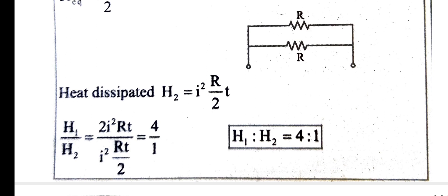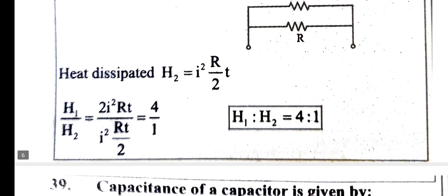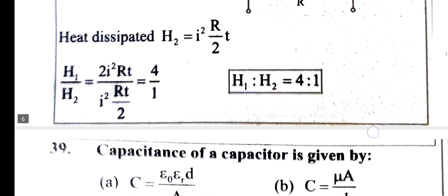Let's assume the H1 by H2 ratio. The ratio H1 by H2 is 1 is equal to 4 raised to 1.